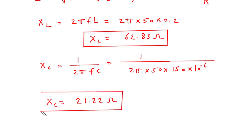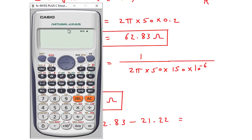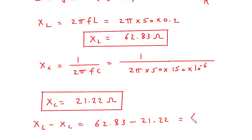Now we have the values of XL and XC. So we will find XL minus XC first. XL minus XC is 62.83 minus 21.22, which equals 41.61.